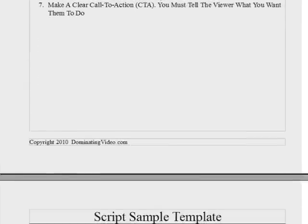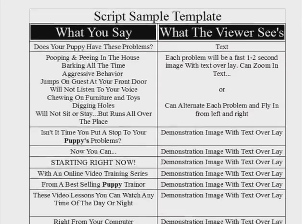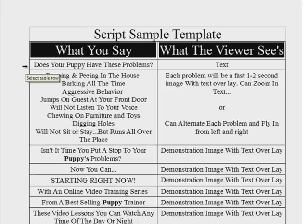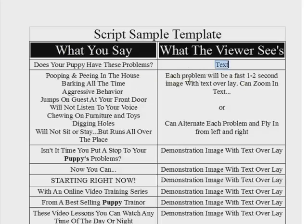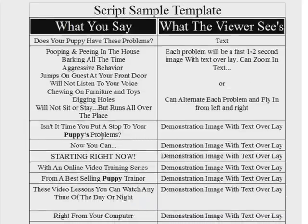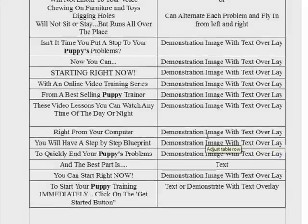Here I have a script template broken into two different columns. On the left-hand side is what you say — a word-for-word script of exactly what you would say. On the right-hand side, this is what the viewer sees. For example, 'Does your puppy have problems?' — this is a text. Then I have a number of problems: pooping and peeing in the house, barking all the time. On each of these I will have a fast one or two second image with a text overlay, or I can zoom. Each of these can fly in from the left or the right. Then I say, 'Isn't it time to put a stop to your puppy's problems? Now you can, starting right now.' I simply read the script and on the right-hand side, this is what the viewer will see.